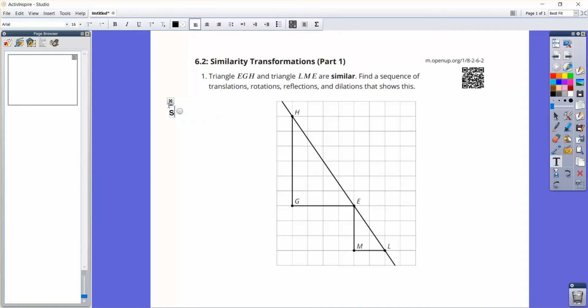The main definition of similarity that you have most likely heard is basically that similar figures – figures are similar if they can be rotated, reflected, translated, and or dilated to overlap each other. That's sort of a plain English definition. If they're similar, you can rotate them, reflect them, translate them, and dilate them to overlap each other. We're going to see a couple of examples of that right now.